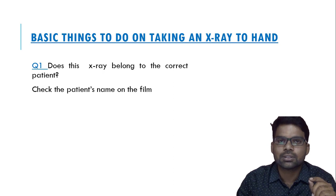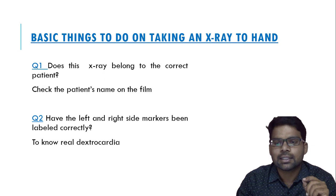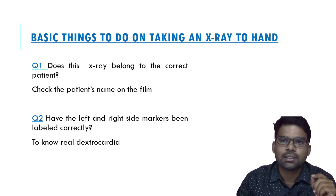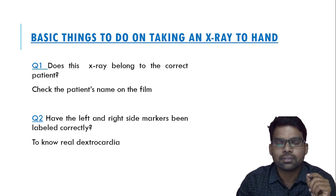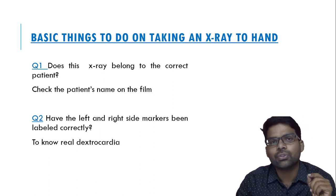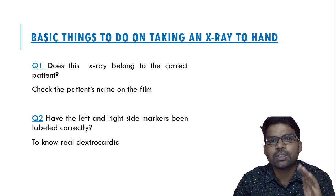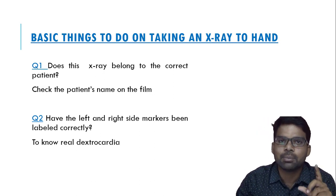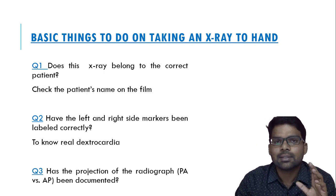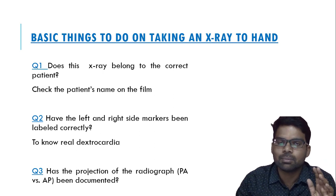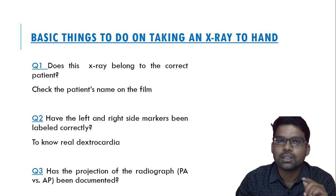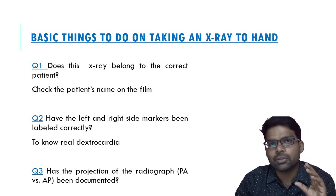Number two: have the left and right side markers been labeled correctly? If you see the chest X-ray film, you will see letters like L for left and R for right. The side is usually marked before taking the chest X-ray. This marking of left and right side is very important in assessing cardiac conditions like dextrocardia. Number three: has the projection of the chest X-ray - like PA film or AP film - been labeled? We will learn more about PA and AP views in the coming slides.